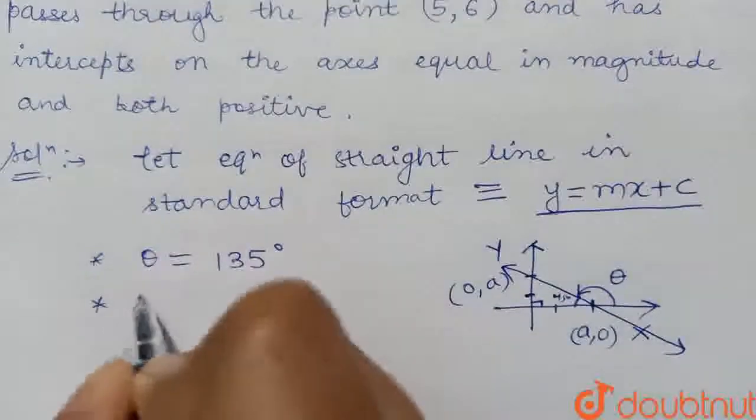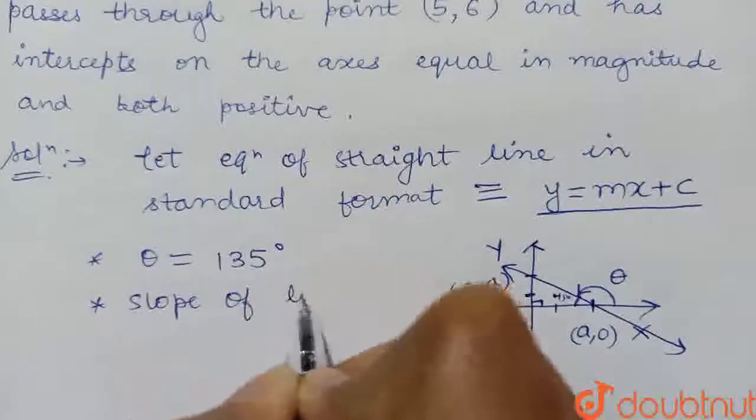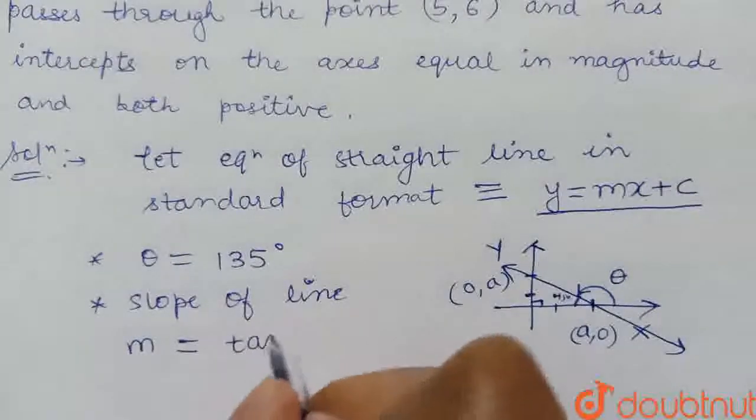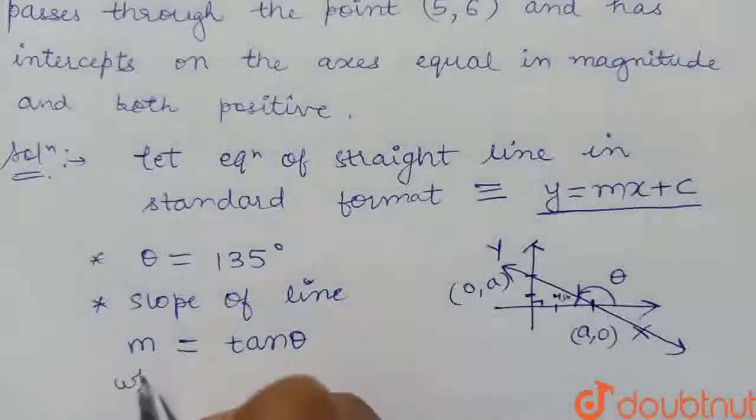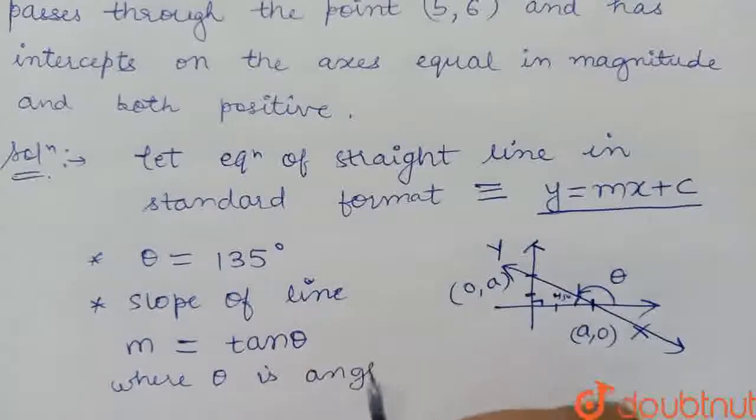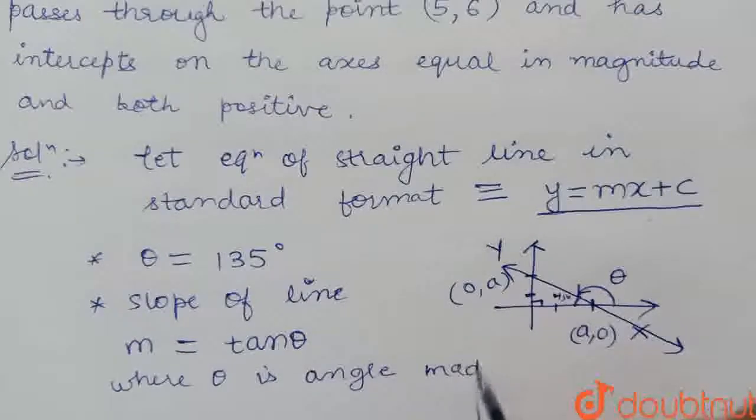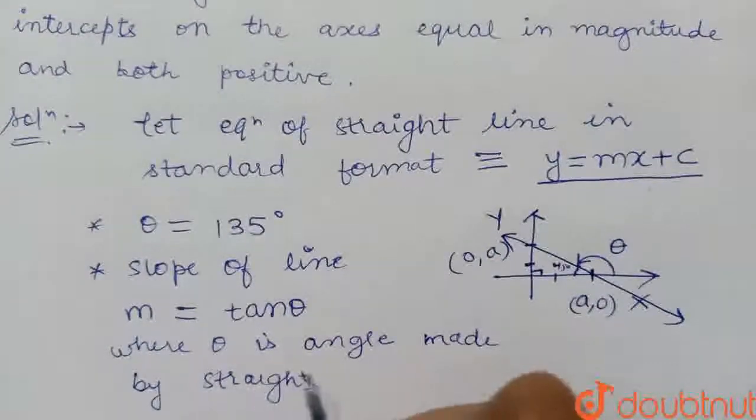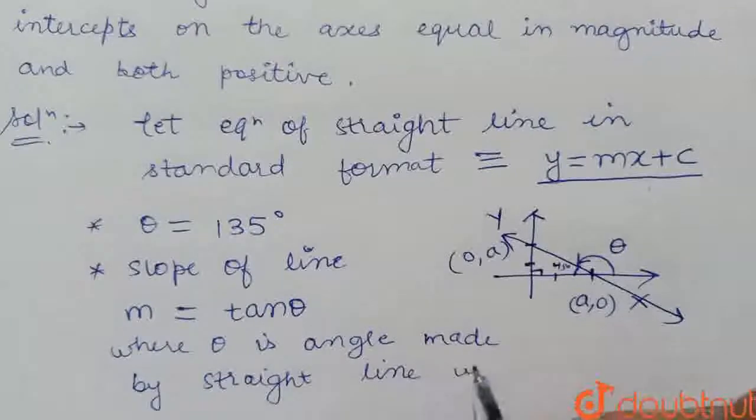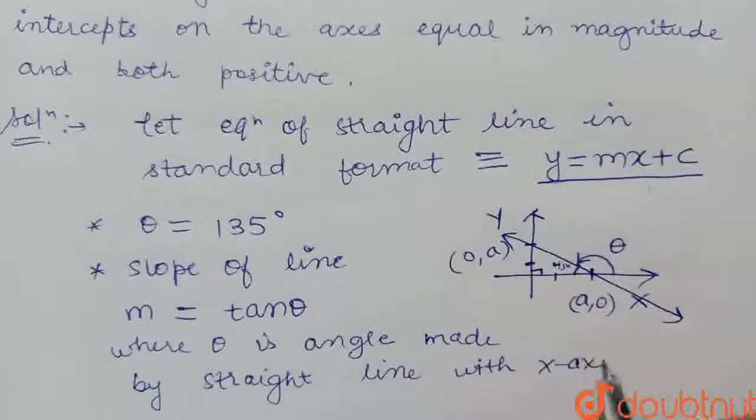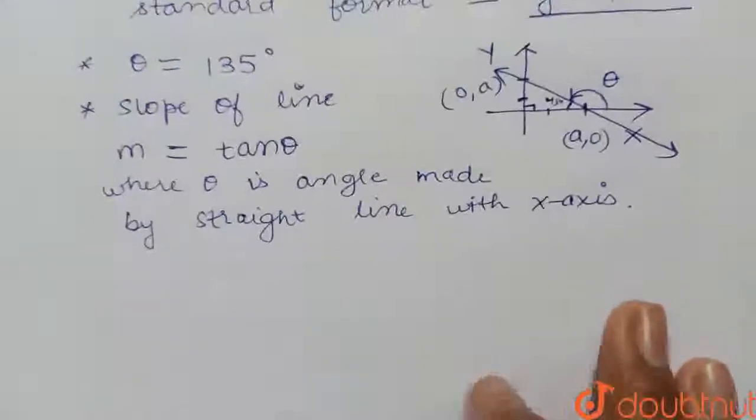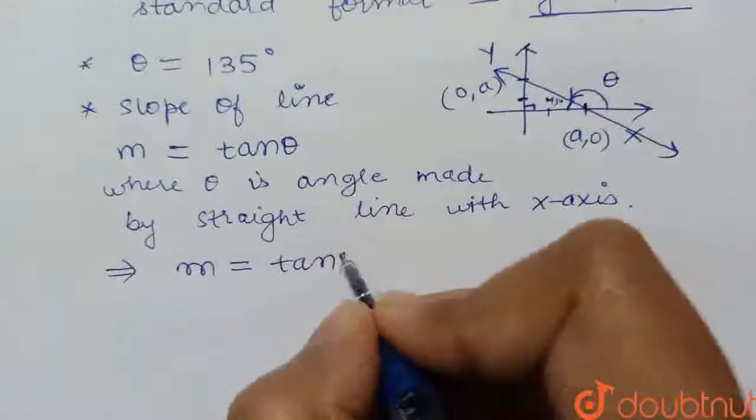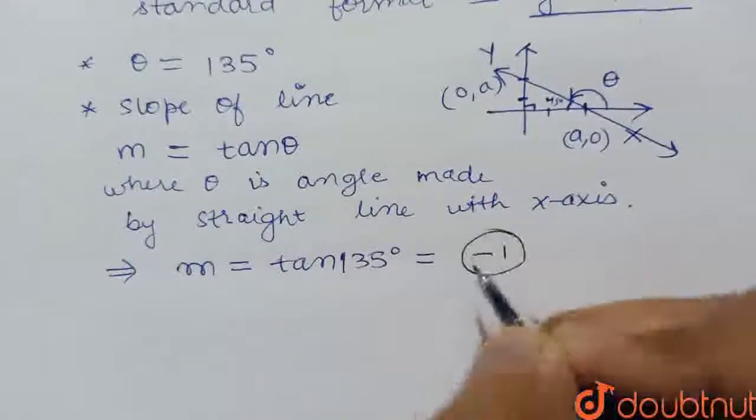So we can find the slope. The slope of the line, which we denote by m, has value equal to tan theta, where theta is the angle made by the straight line with the x-axis. So we get slope value equal to tan 135 degrees, which equals minus 1.